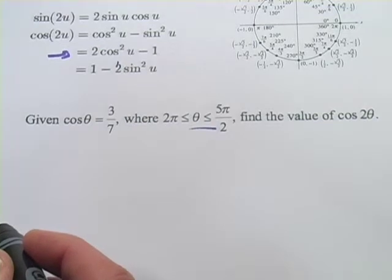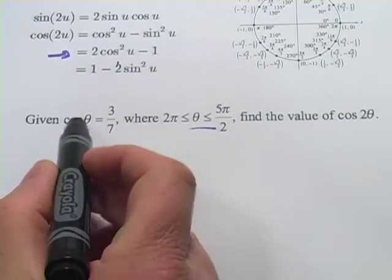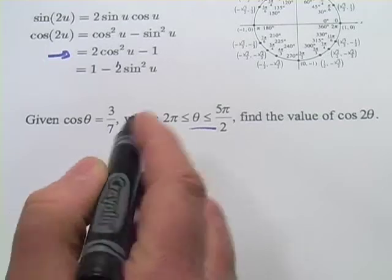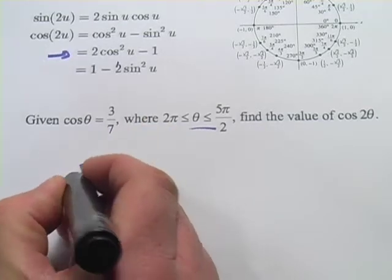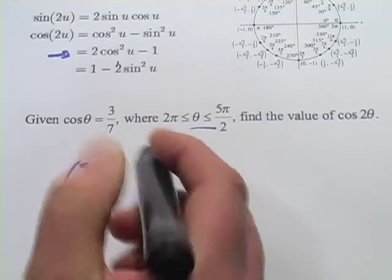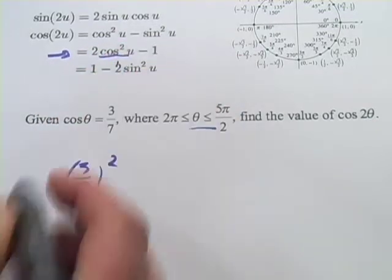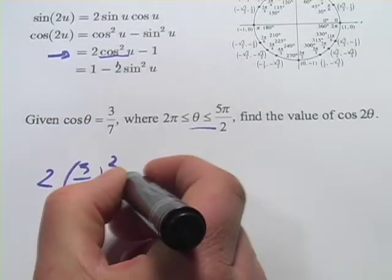So 2 times the cosine squared of u minus 1. And the cosine of theta here is 3/7 so it's going to be 3/7 squared. So that's this part of the formula. We multiply that by 2 and we subtract 1.